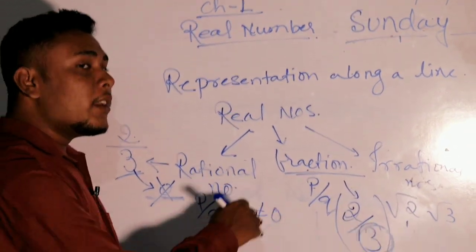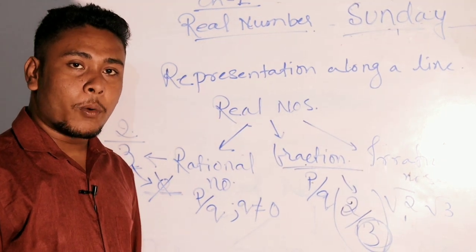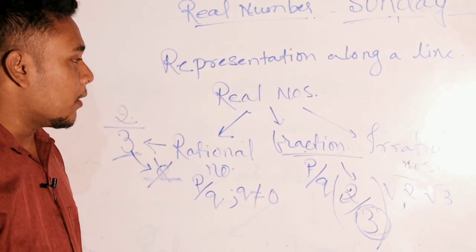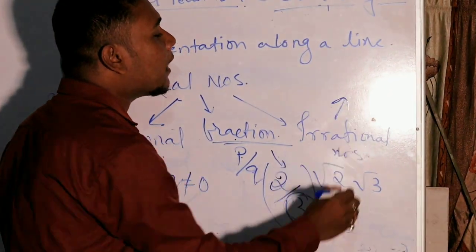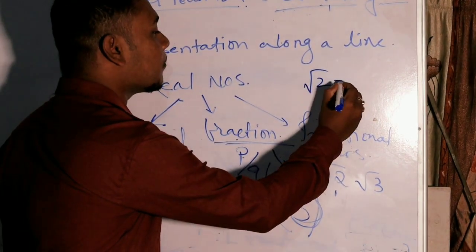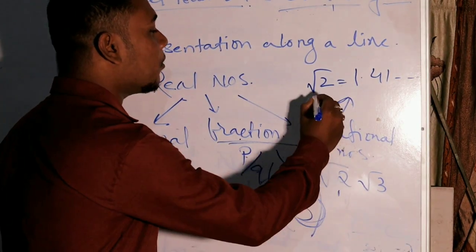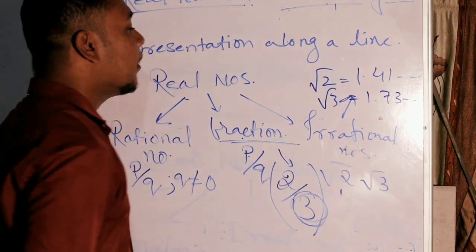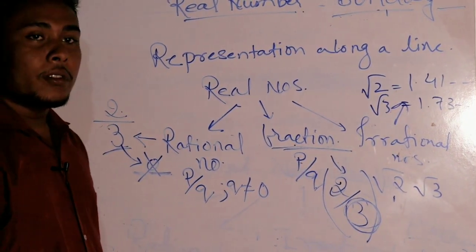Fraction also has its parts like mixed fraction, proper fraction as well as improper fraction. Next coming to irrational number - those numbers that does not have any ending, for example root 2, the value is 1.41 and so on, root 3 is 1.73 dot dot dot. So this was about the introduction.